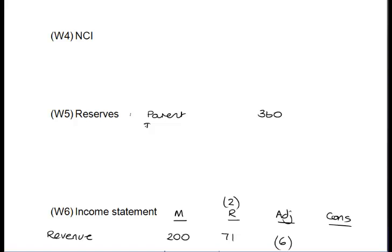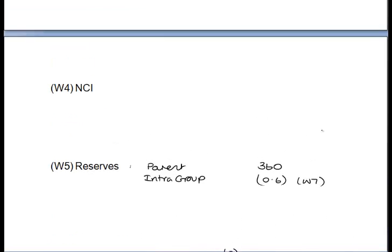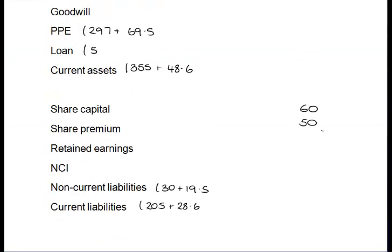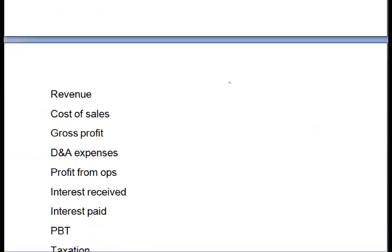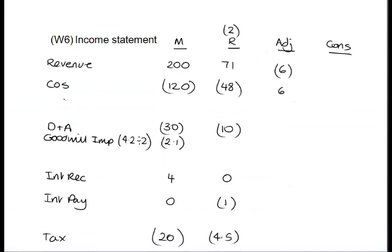Because the profits relate to the parent company, I'm going to take out the figure of 0.6 from the parent's profits as far as group reserves are concerned and cross-reference that to our note. Then we go up to the statement of financial position and deduct 0.6 from our current assets. Every time you put through an adjustment, you're thinking debits and credits. Because it relates to the current year, we also have to reflect this adjustment in our closing inventories in cost of sales. Because it's the parent selling to the subsidiary, you adjust the books of the parent.